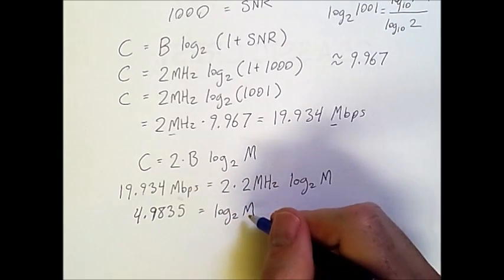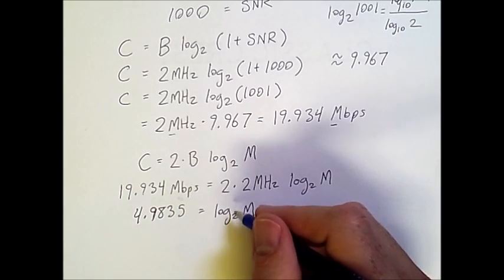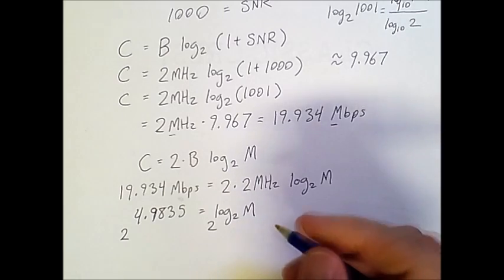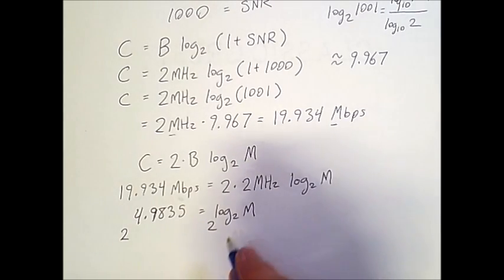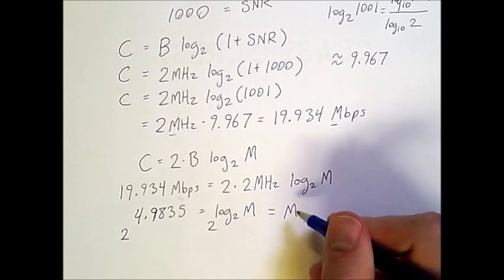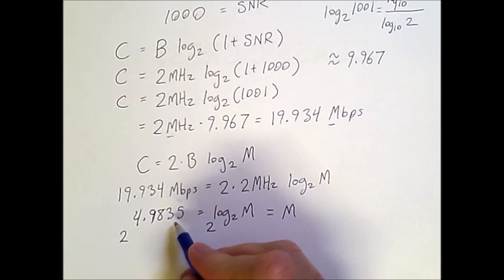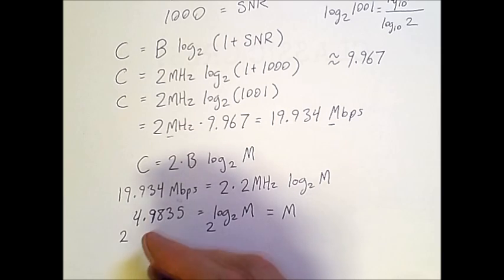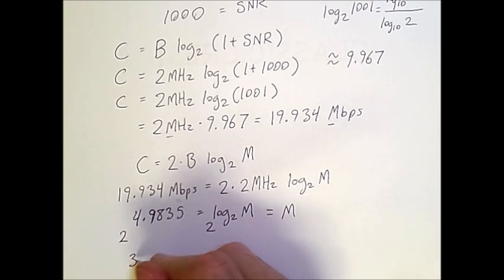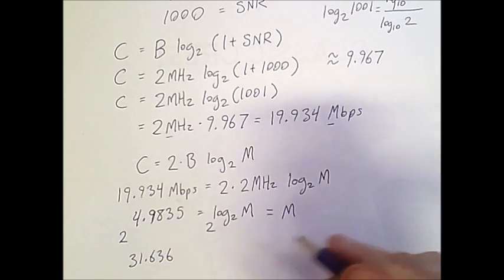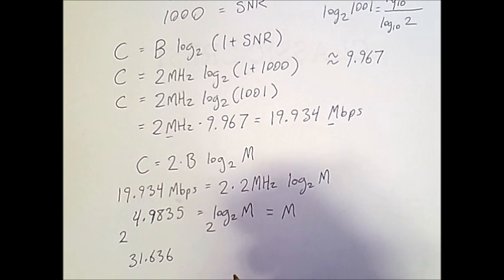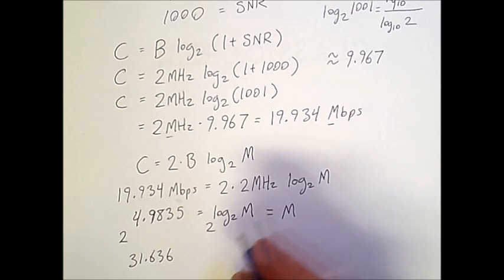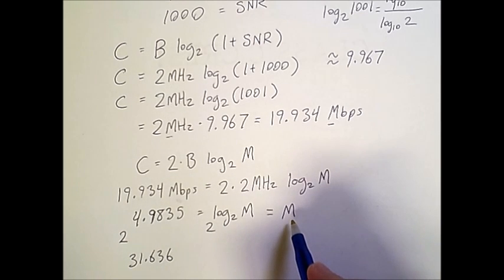Which is equal to log 2 of M. And so, to get rid of the log base 2, we have a base of 2 on each side. And that makes M equal to 2 raised to this power. Now, if I use a calculator to determine what this is, I'll get 31.636. But once again, as computer scientists, we should quickly see that 2 raised to the 5th is 32.